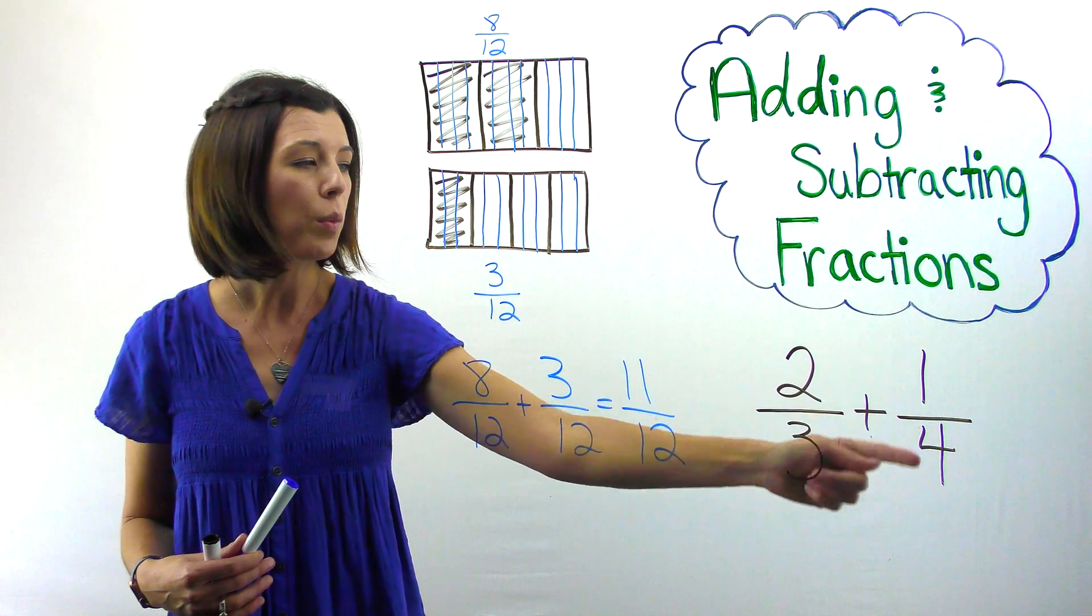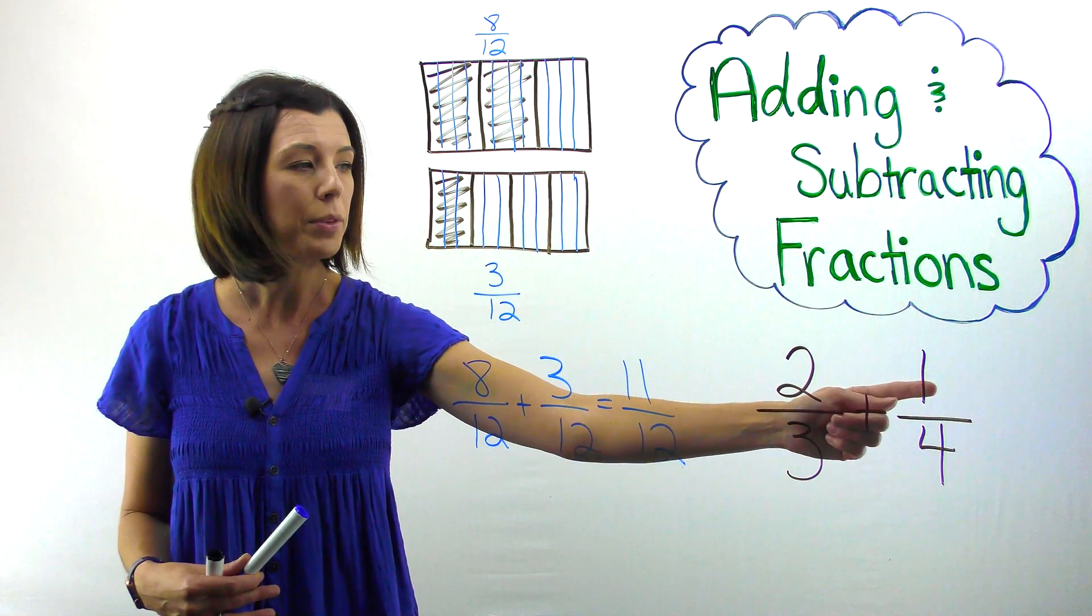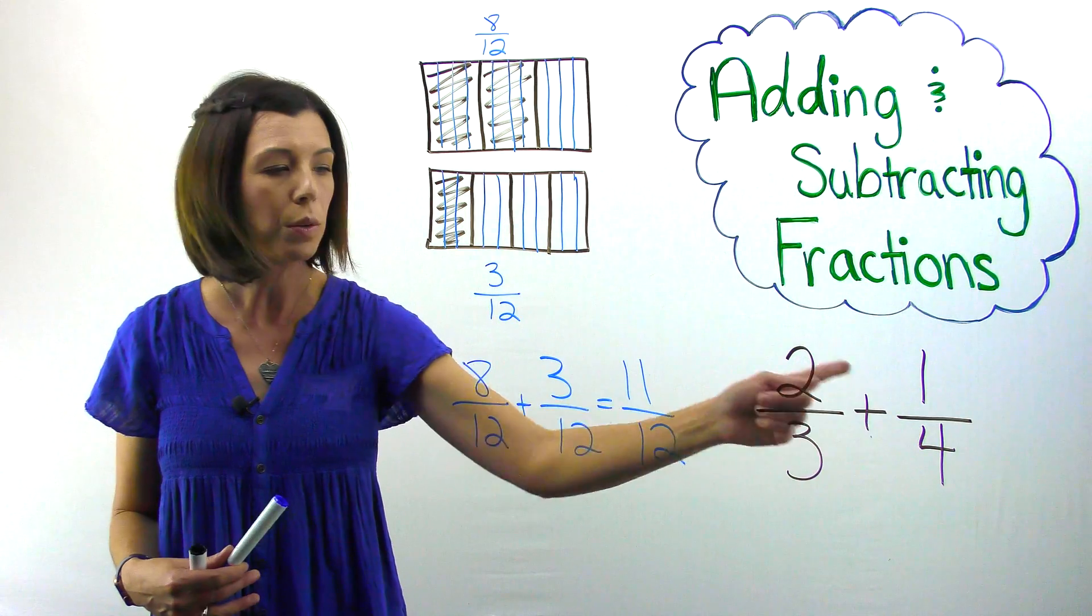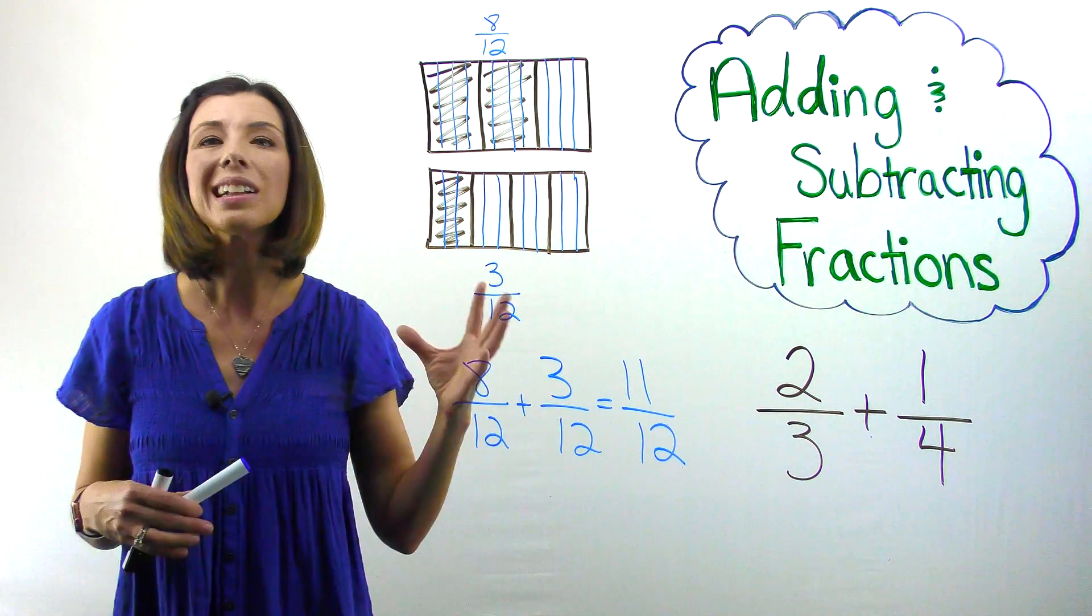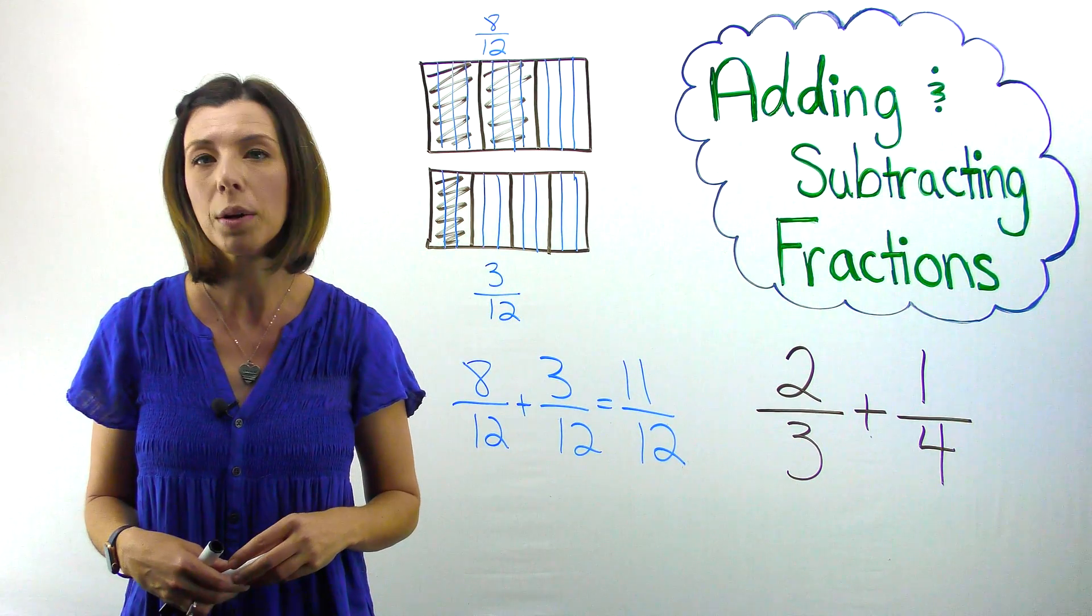And then I can multiply one-fourth times the numerator and the denominator by three as well, which would give me three-twelfths. Now that I know the answer, let me go ahead and try and put a word problem to this.